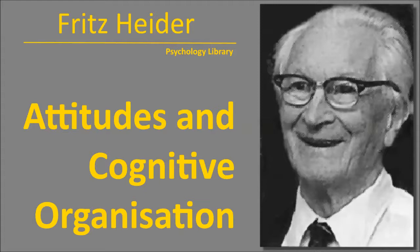Therefore, the second part of the hypothesis must be stated as follows — tilde A B: In the case of three entities, a balanced state exists if all three relations are positive in all aspects, or if two are negative and one positive. Examples: P L O plus O L X plus P U X — P likes O because O admired P's action; P wants his friend O to like P's productions; P wants to do what his friends admire. P U O plus P L X plus O L X — P wants his son to like what he likes; P likes X because his son likes it.